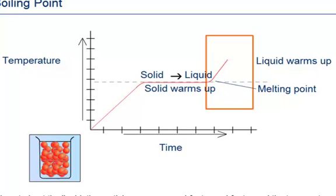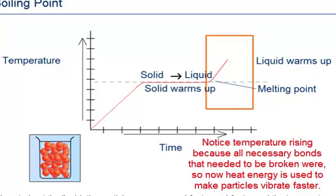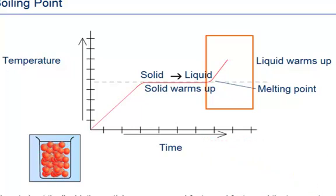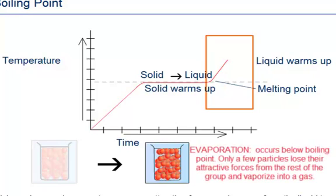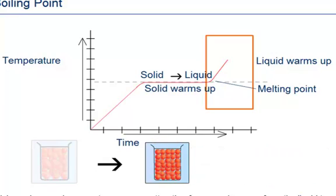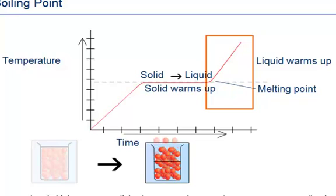If you continue to heat the liquid, the particles will start to move around faster and faster, and the temperature will start to rise again. You've already broken the bonds needed in the solid phase, so the particles are moving more easily. Some of the particles are going to gain enough energy to overcome attractive forces and escape from the liquid to become a gas — this is called evaporation. It happens before the vaporization point. As the temperature rises, more particles have enough energy to escape, so evaporation can happen even faster.